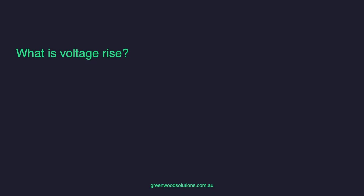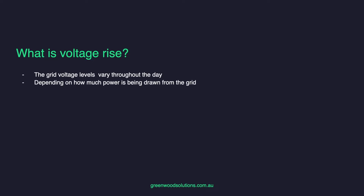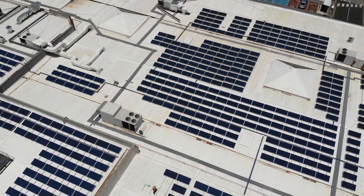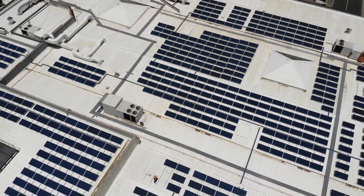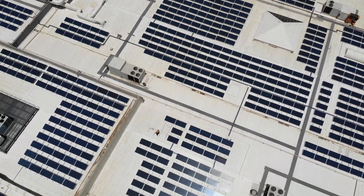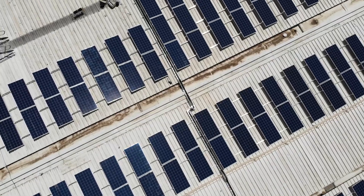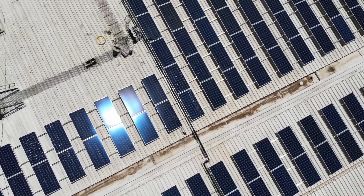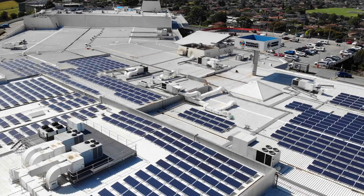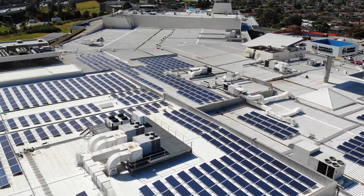So let's start with asking: what is actual volt rise? The grid voltage level varies throughout the day depending on how much power has been drawn from the grid and also how much solar is being sent back to the grid. For energy to flow, the voltage at the inverter is always higher than that at the grid. Issues can occur where cables haven't been sized correctly — if there's too much resistance, then the voltage has to rise.